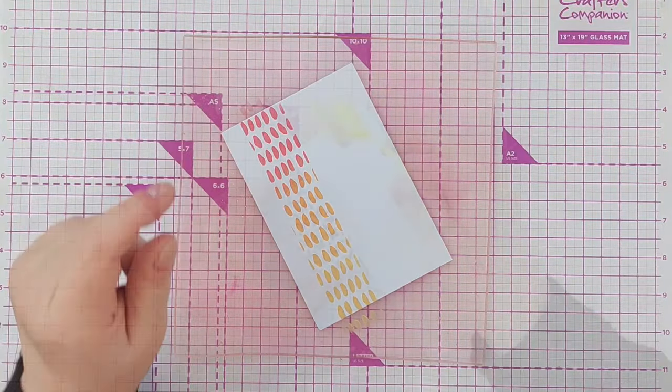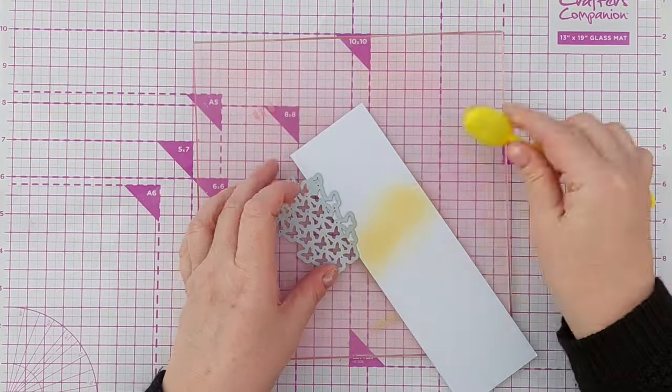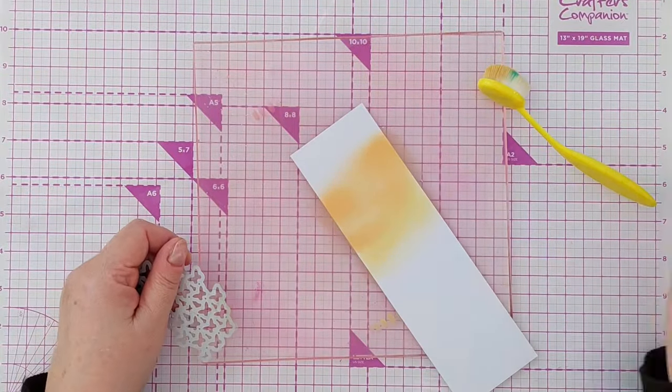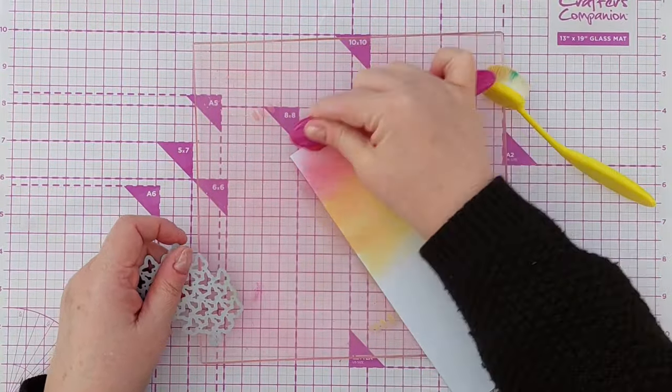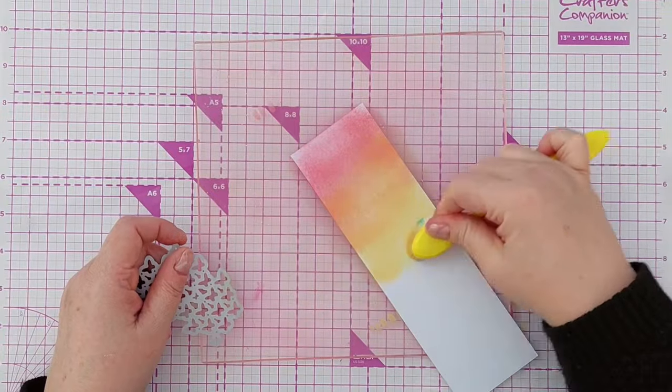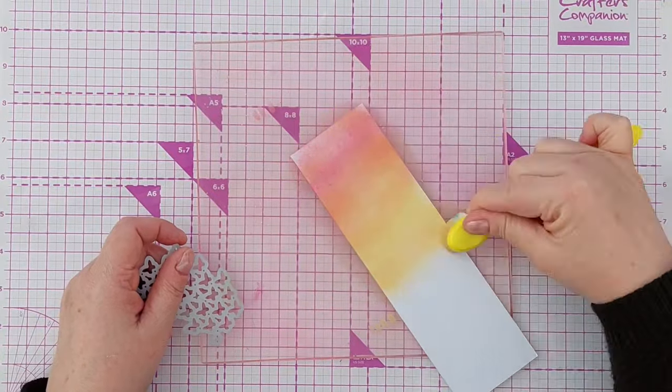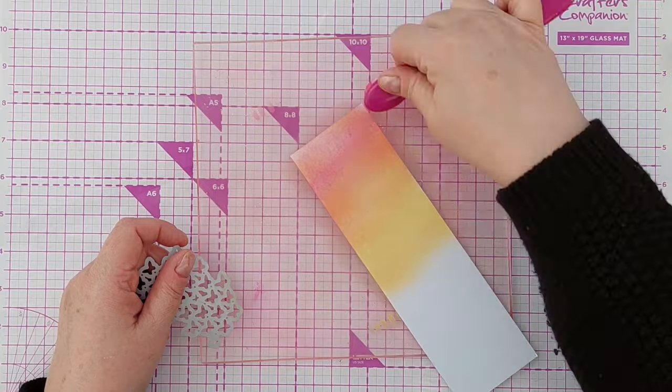I also blended the same colors on another piece of smooth white cardstock and I'm going to die cut from this. I have a little frame die but I'm not after the frame, I'm after the butterflies that it cuts out as well.